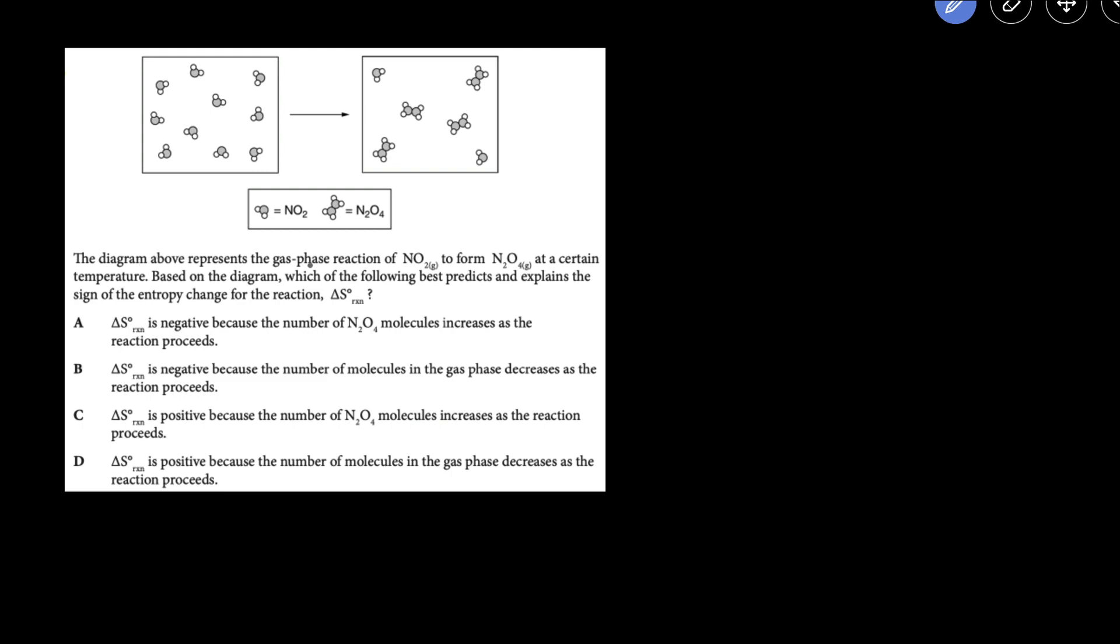This problem tells us that we have a gas reaction of NO2 becoming N2O4 at a particular temperature, and we're supposed to look at this diagram to determine the sign of the change of entropy, which is the delta S of the reaction.